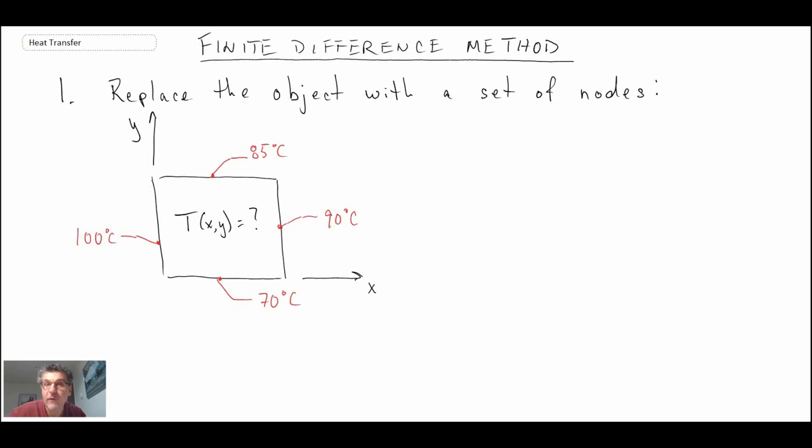There we have a plate with four different boundary conditions, one on each side, and this is the problem of a square plate. Then what we want to do is convert that object into a grid of finite nodes.